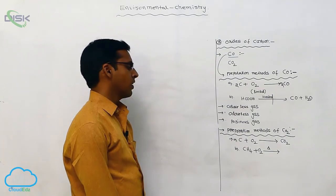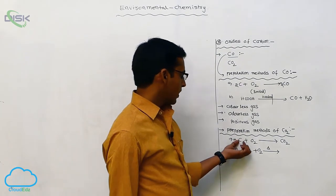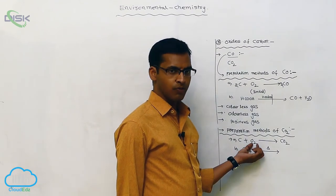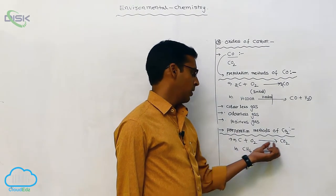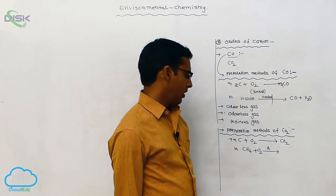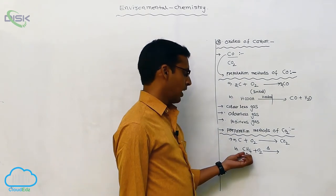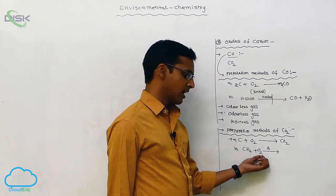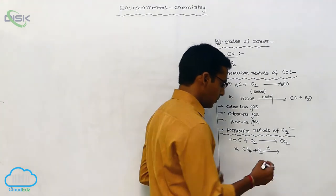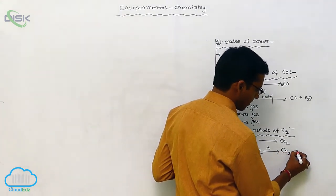Preparation methods of carbon dioxide. Carbon is reacted with a sufficient amount of oxygen to produce carbon dioxide. Next, hydrocarbons like methane are reacted with oxygen to produce carbon dioxide and water.